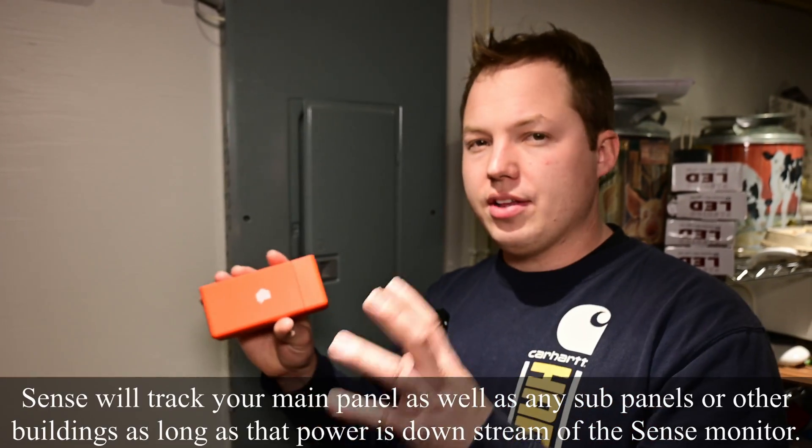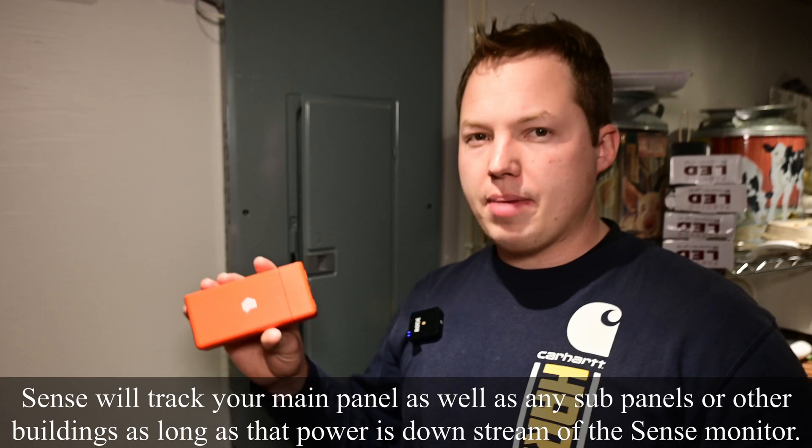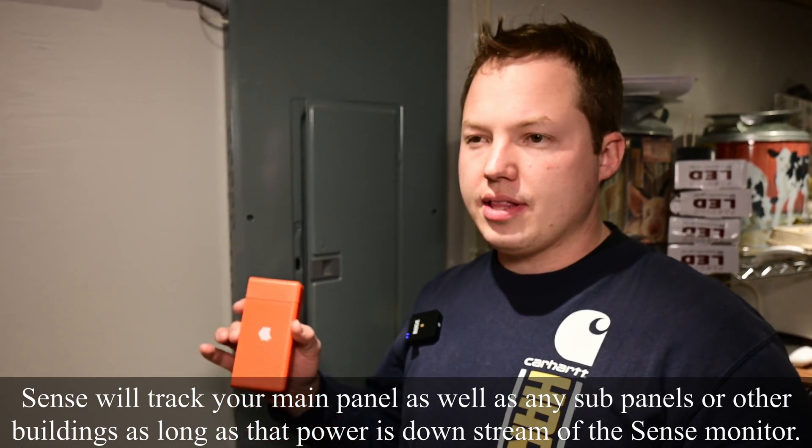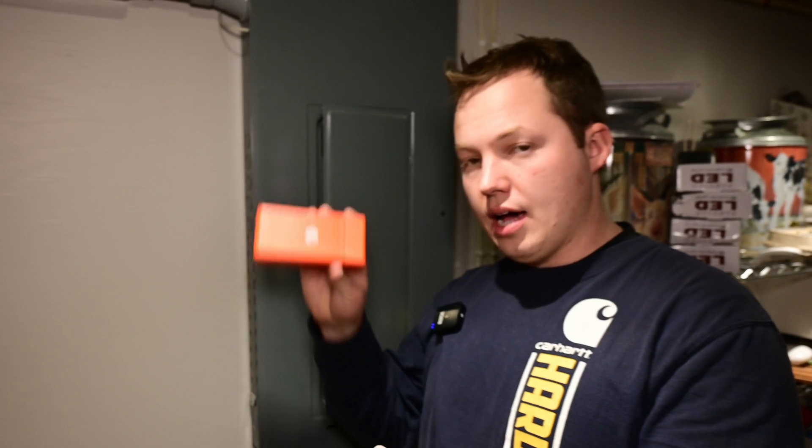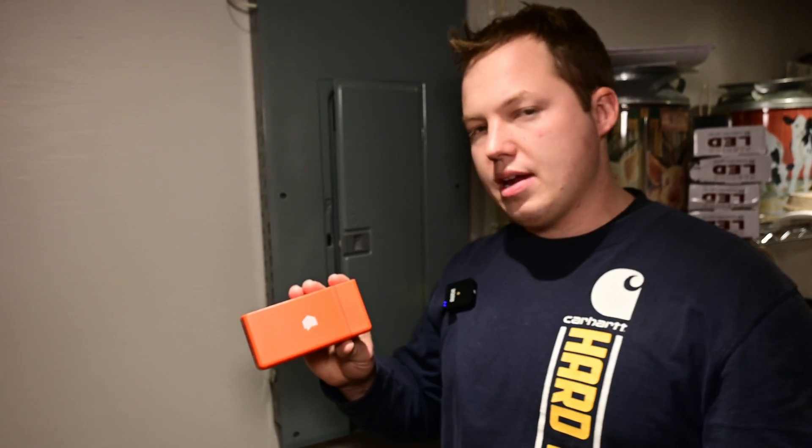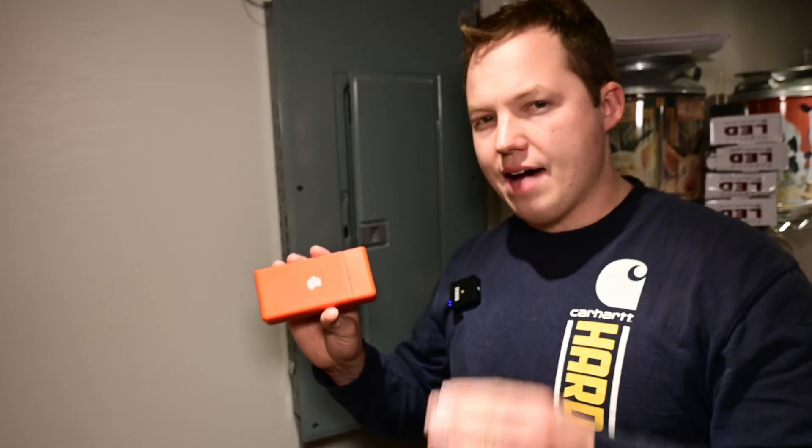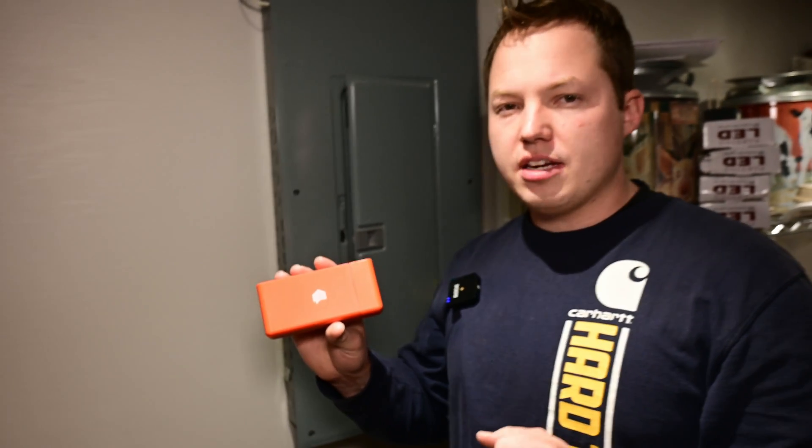This device is going to be installed in the main panel of your house or whichever panel is first on your property. So if you have a panel in a building that is before your house, you could install this upstream, and that would cover any panel that is downstream of that location. Wherever the first panel is after the electrical meter, that's going to be the best place to put it. Let's go ahead and open the panel up and I'll show you what we're going to be looking at.